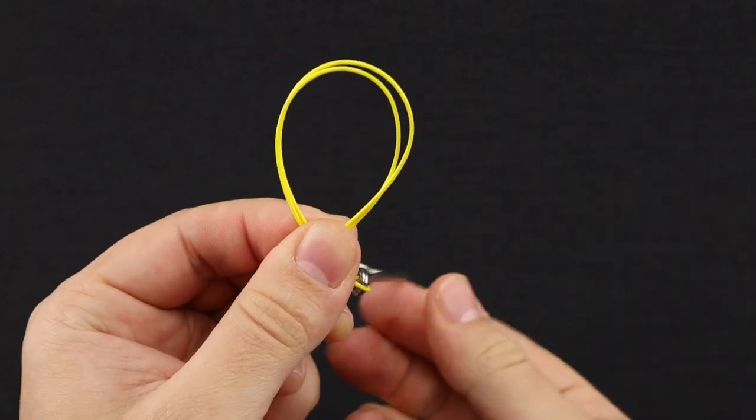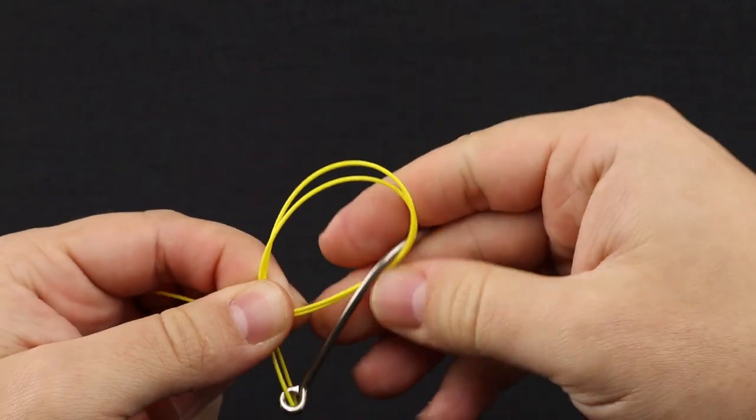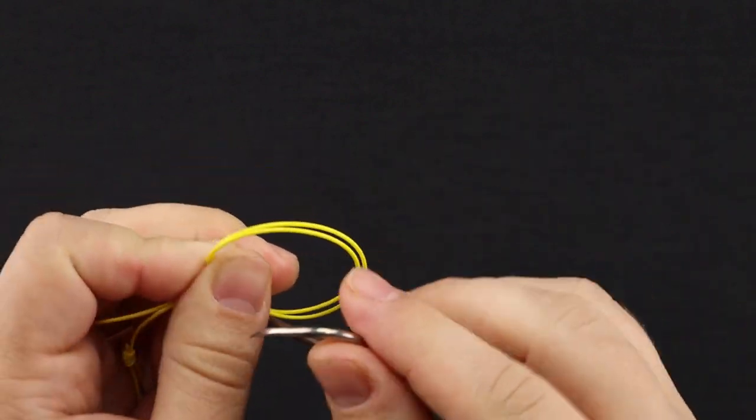Now you're going to make sure this loop is as big as the item you're trying to pass through it. And same as before, we'll go through once, and twice.